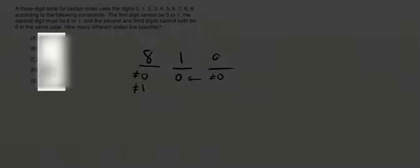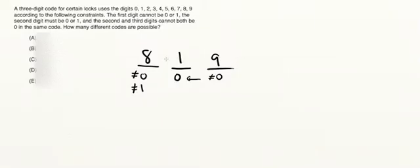And then the third digit cannot be 0 if the second one is 0. So here, given that the second one is 0, the third cannot be 0 as well. So that leaves 9 possibilities. And so all I have to do to figure out the number of possibilities if we have 0 in the middle is to multiply these three numbers together, which gives 72.